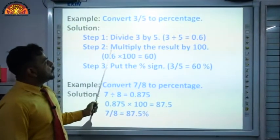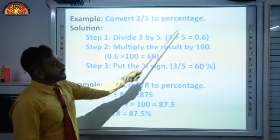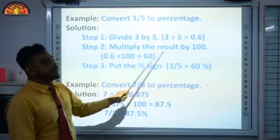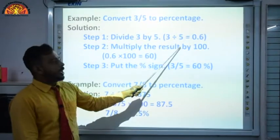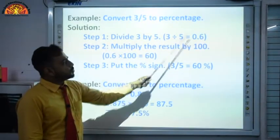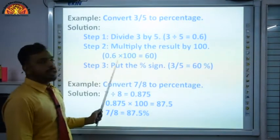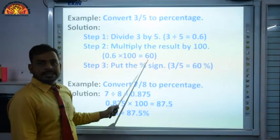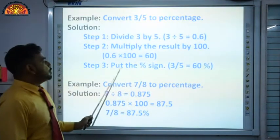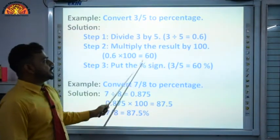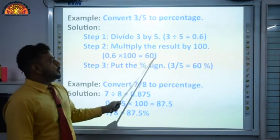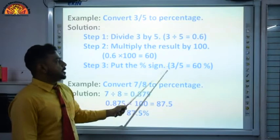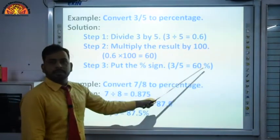Step 2: multiply the result by 100. 0.6 × 100: decimal shifts 2 places to the right because we are multiplying by 100. So the result is 60, and putting the percentage sign gives 60%.